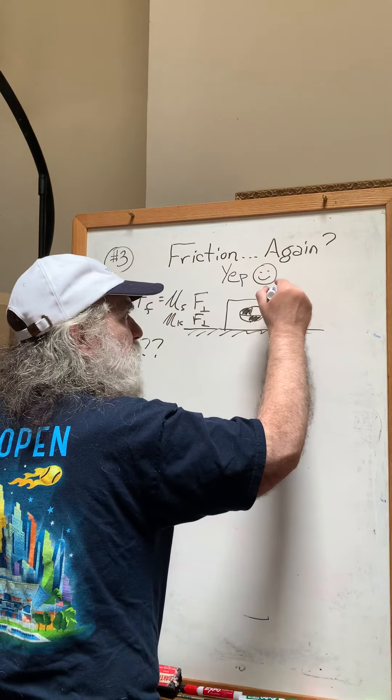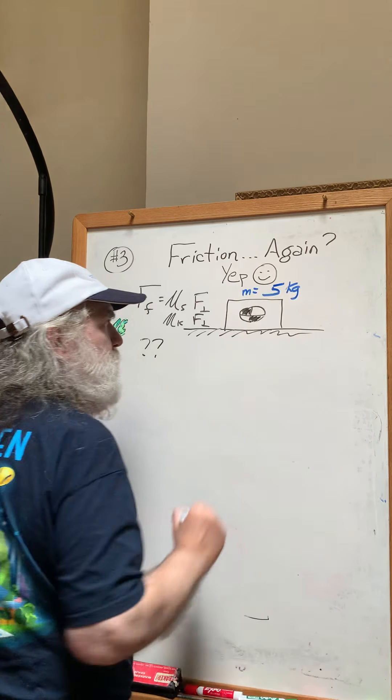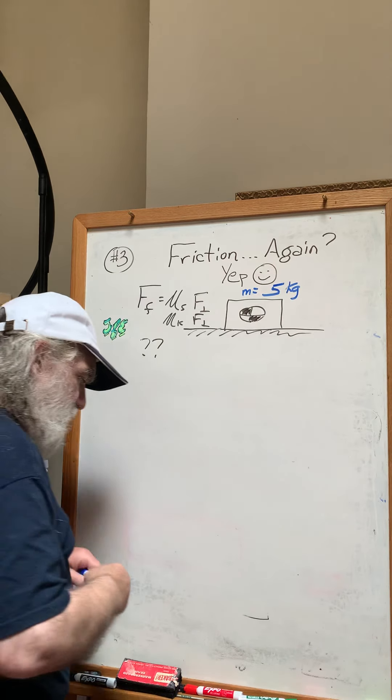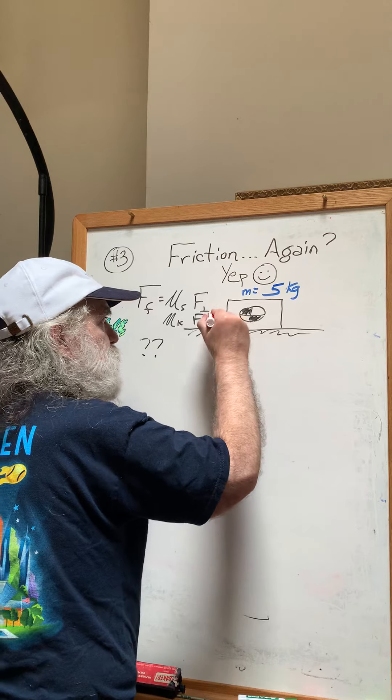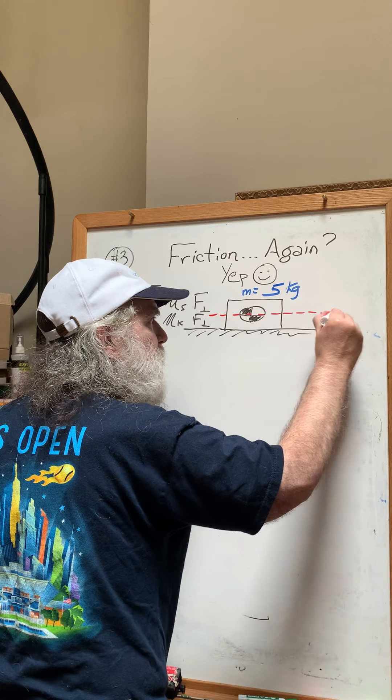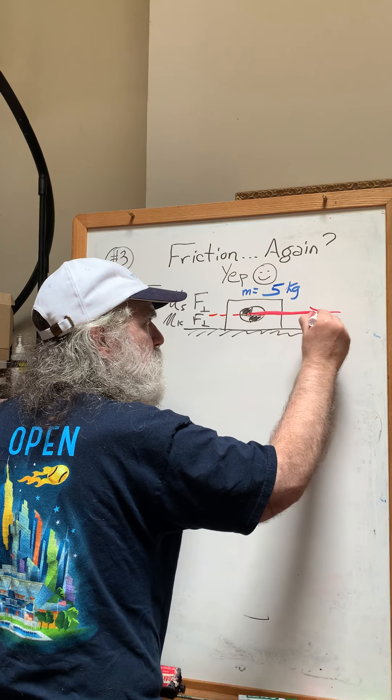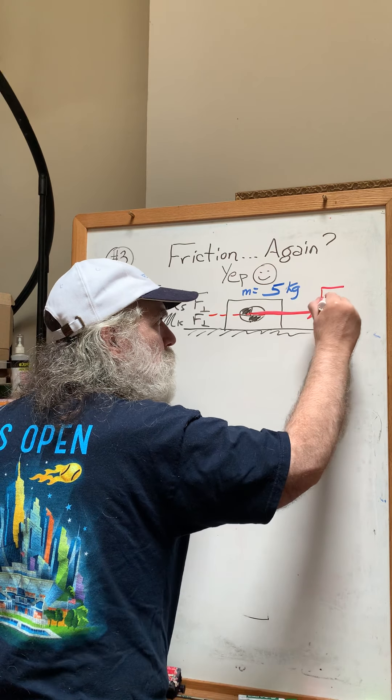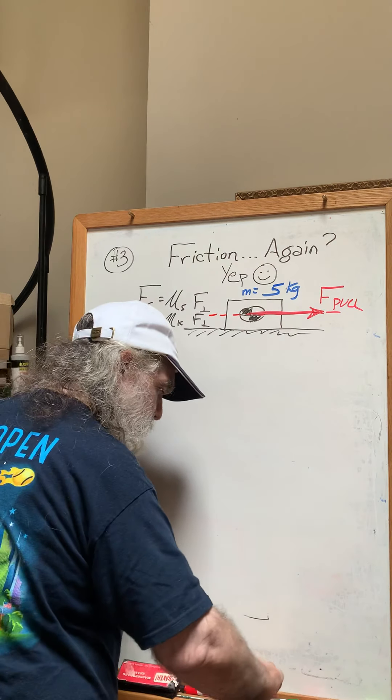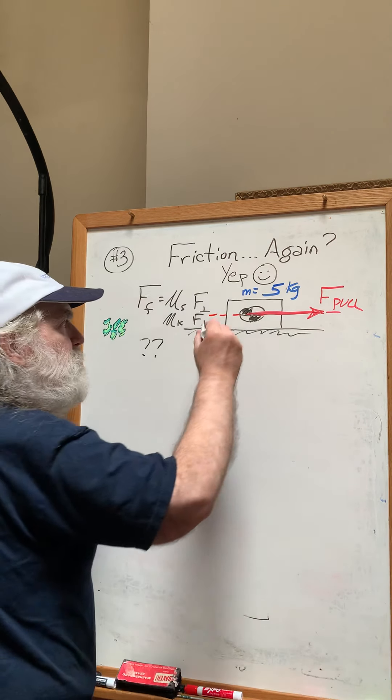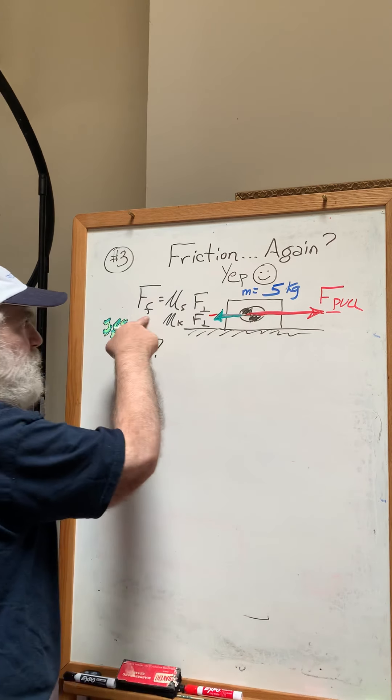Let's make the box five kilograms so we have a mass for the box. I'd like to draw the forces that act in the direction of motion first, which are along this direction. The box moves left and right. One of the forces is going to be me or you pulling the box, and it's going to be opposed by a frictional force F sub friction.